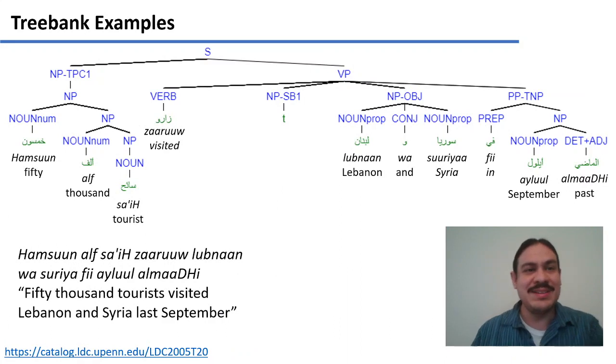Oh, a final example from Arabic. We have Hamsoon alf saih zharu Lubnan wa Suriya fi Ailu al-Mazi. So 50,000 tourists visited Lebanon and Syria last September. And we have a sentence, noun phrases, verb phrases, verbs, and noun phrases and so forth. So this is a system that can be used for any human language, and as you can see, it will take time, but we can explain the structure of sentences in this way.